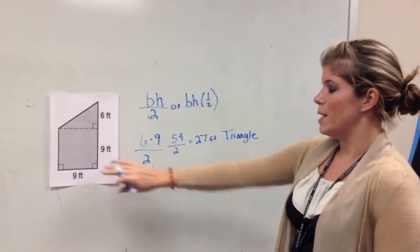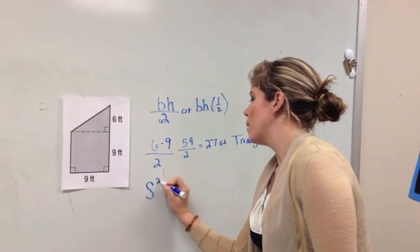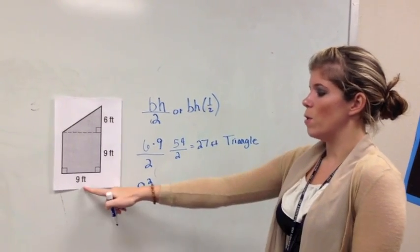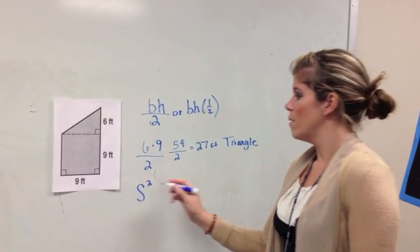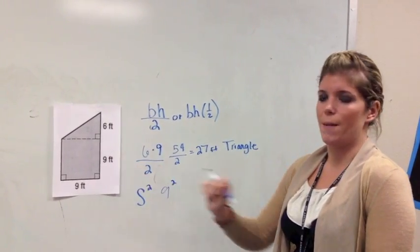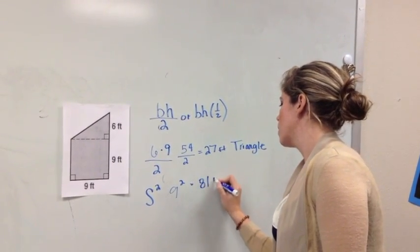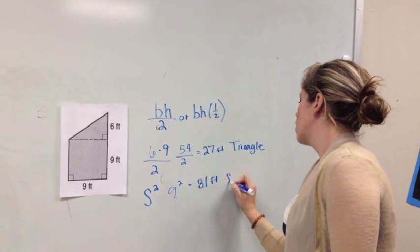Step 2, I need to find the area of my square. To find the area of a square, my formula is S squared. So my first side here is 9 squared, because both sides are the same in the square. 9 times 9, we get 81 feet for the square.